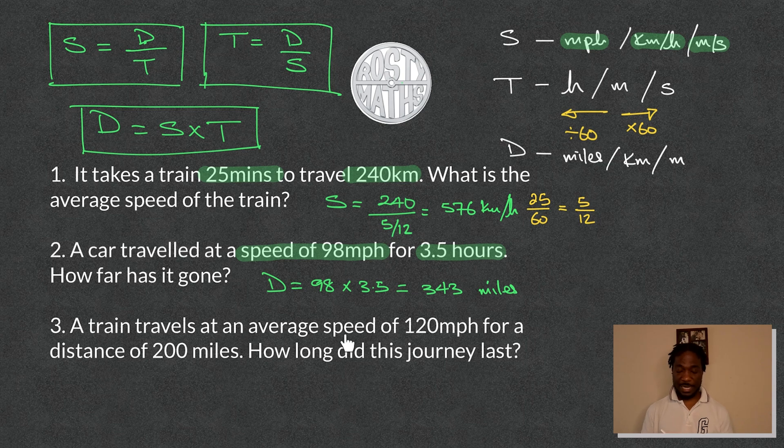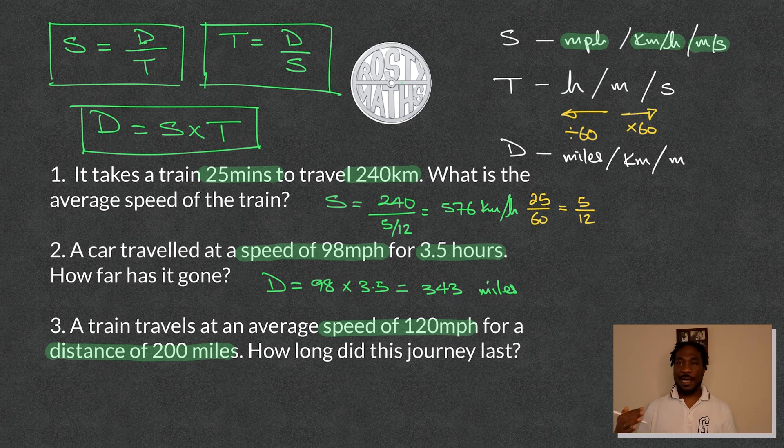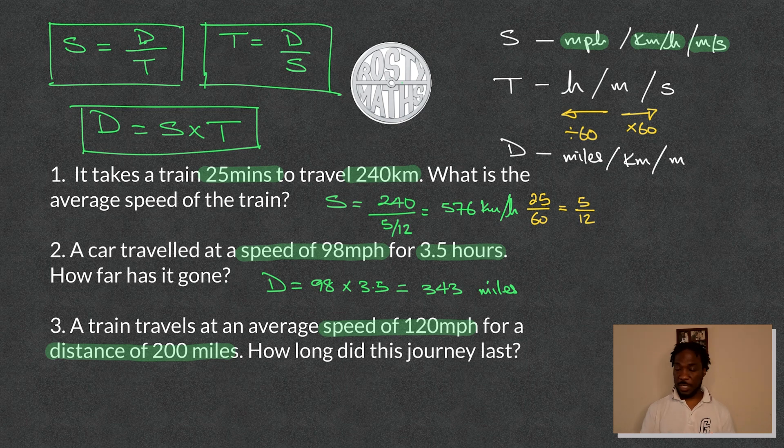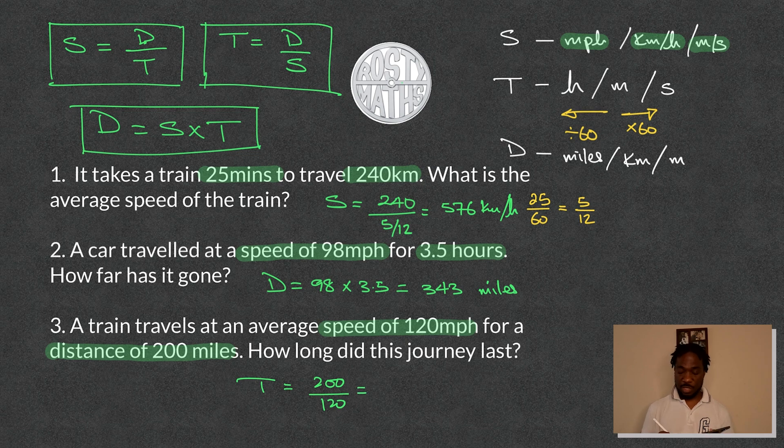And finally, to finish this one off, a train travels at an average speed of 120 miles an hour. So they have given me the speed of the train and it travels for a distance of 200 miles. How long is the journey? How long is time? So we need to calculate the time it took. And from our formulas up here, time is distance over speed. So to work out my time, I'm going to say the distance that it traveled is 200 miles. The speed is 120 miles. So it took one and two thirds of an hour.